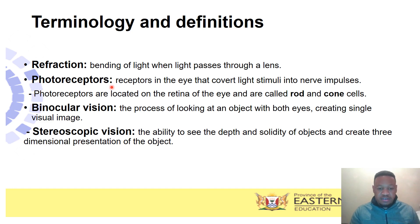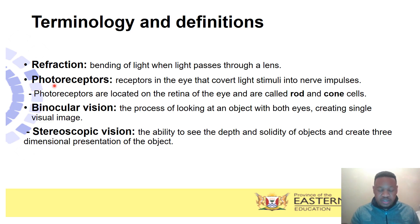Photoreceptors — you already know what receptors are. These are the structures or organs that help us pick up stimuli from the environment. In our eyes, we have photoreceptors, which are receptors that convert light stimuli into an impulse. The word 'photo' means light, so our eyes are sensitive to light stimuli. Photoreceptors are located in the retina, and there are two types: the rod and the cone cells, which will be explained later.